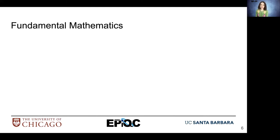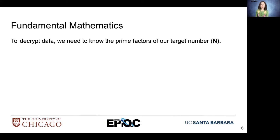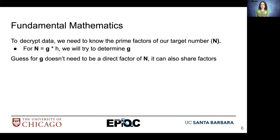Let's talk about some fundamental mathematics that we'll need to understand. To decrypt data, first we need to know the prime factors of our target number n. So for n equal to g times h, we want to determine some g. The guess that we have for g doesn't need to be a direct factor of n — it can also share factors. That's because we can have the case where n is equal to a times b and g is equal to a times c, so therefore we have a accessible to us, which is a factor of n.